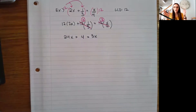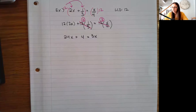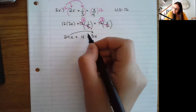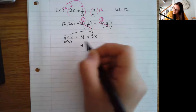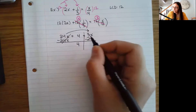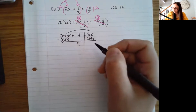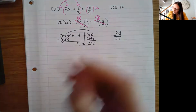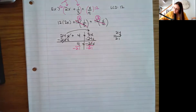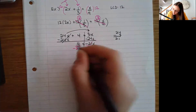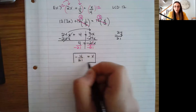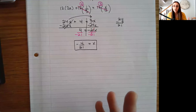12 divided by 4 is 3, and 3 times x is 3x. Now I keep solving — I have x's on both sides this time, not just numbers. I'll bring the x's to the right to keep my 4 on the left. Be careful: it's a positive and a negative, so subtracting gives 24 minus 3 = 21. I have negative 21x. Dividing by negative 21, I get x = -4/21. Since 4 and 21 share no common factors, that is my final answer.